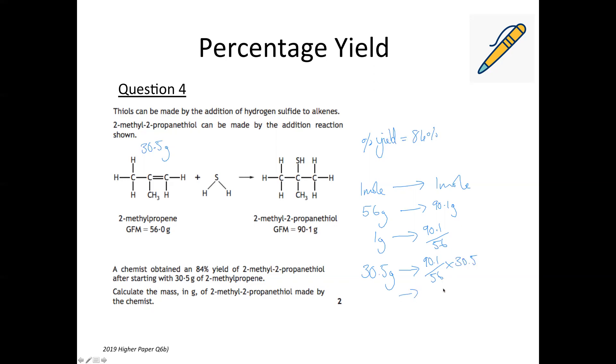So that gives us a theoretical yield of 90.1 divided by 56 times 30.5, which is 49.07 grams. So if our yield's at 84%, we're going to find 84% of that. So 84% of 49.07. So I'll do that by doing 0.84 times 49.07.